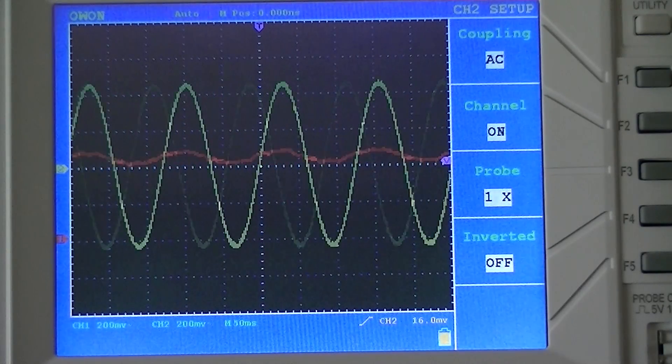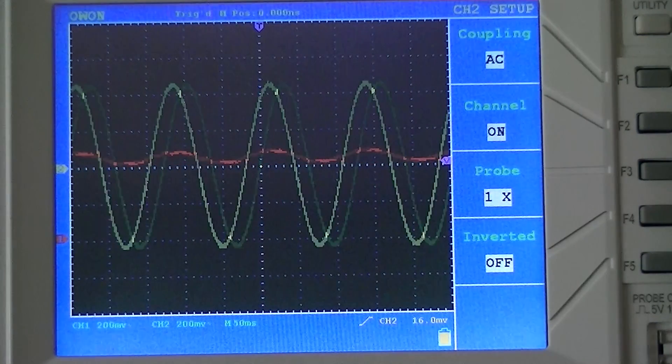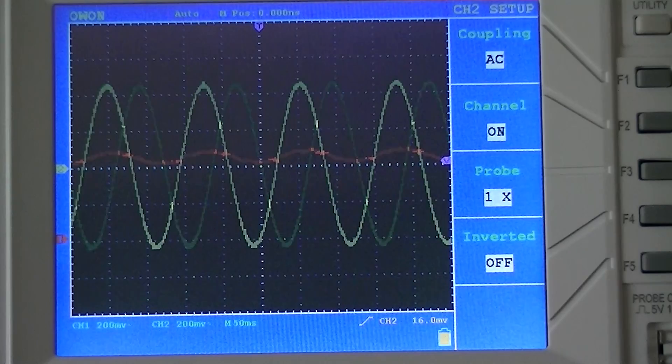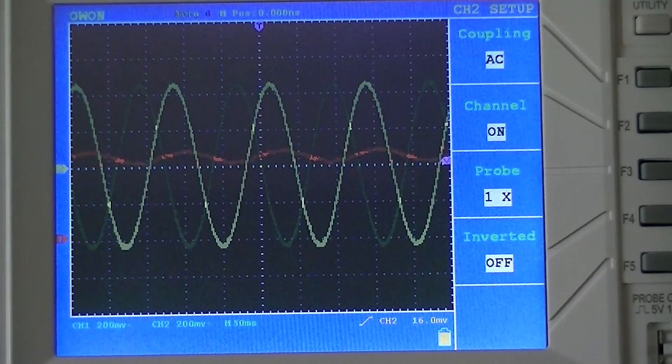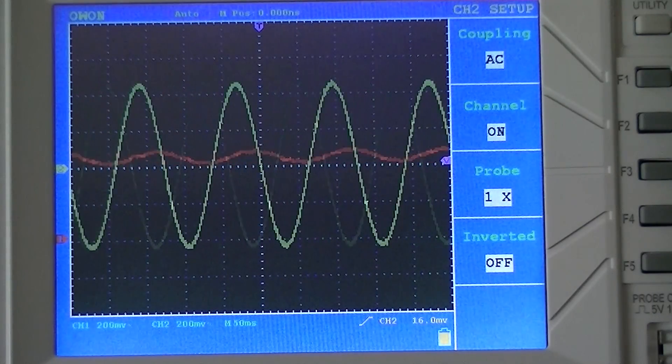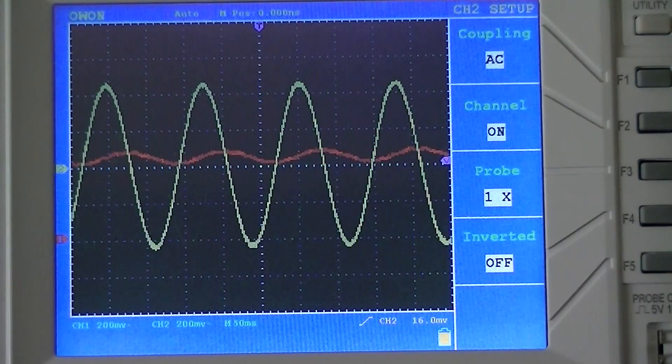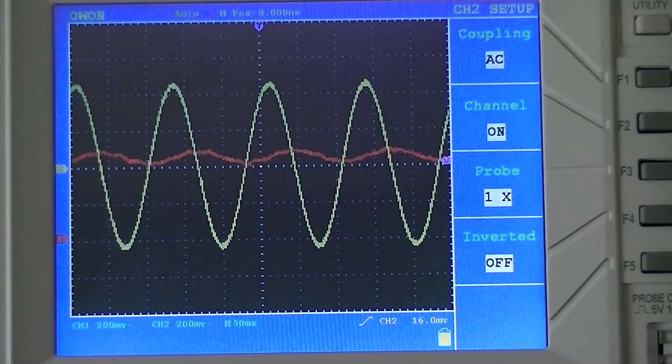As you can see, the yellow waveform is the headphone output from our MP3 player and it is faithfully being reproduced. But the stereo system speaker connection doesn't appear to be able to reproduce the waveform.